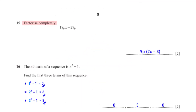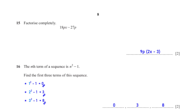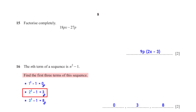Factorize completely 18px minus 27p. The terms have a common factor of 9p, so factoring out gives 9p(2x − 3). The nth term of a sequence is n² − 1. For the first term (n=1): 1² − 1 = 0. For the second term (n=2): 2² − 1 = 3. For the third term (n=3): 3² − 1 = 8.